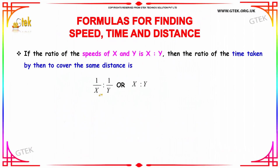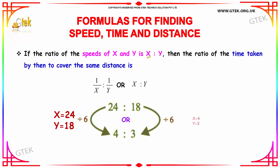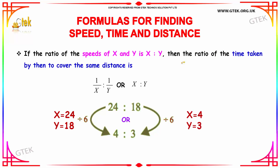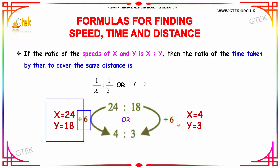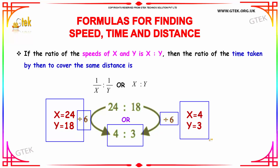Moving further, if the ratio of the speed of x and y is given as x is to y, then the ratio of the time taken by them to cover the same distance is 1 by x is to 1 by y. For example, x equals 24 and y equals 18 — commonly divided by 6 — you get 4 is to 3. So the ratio is 4 is to 3.